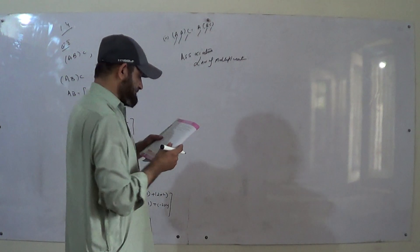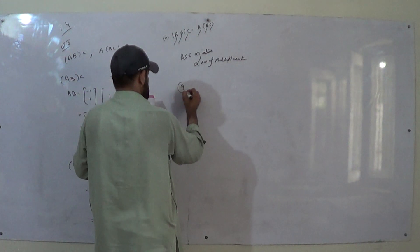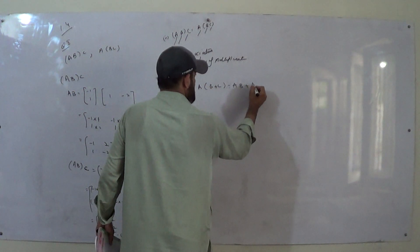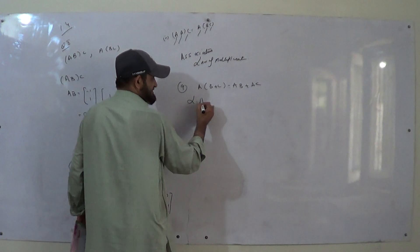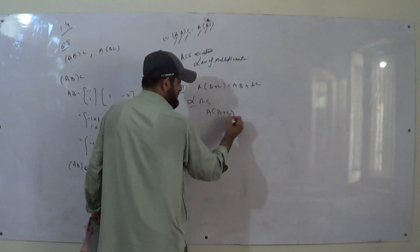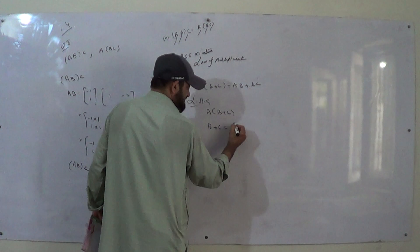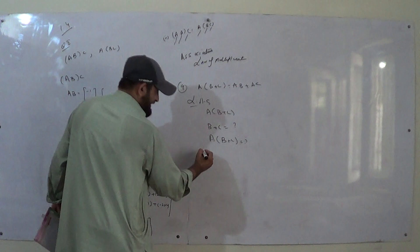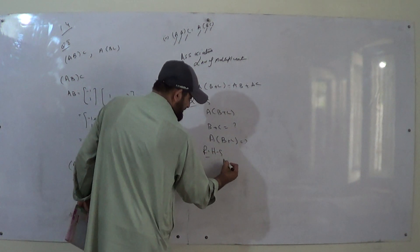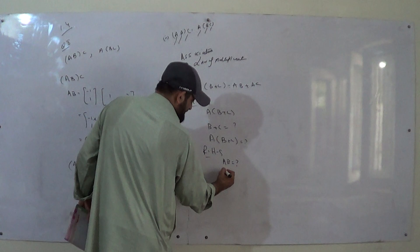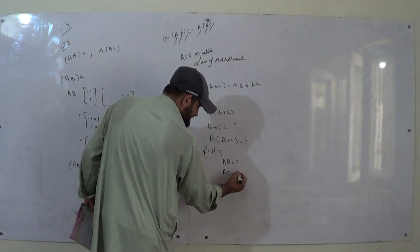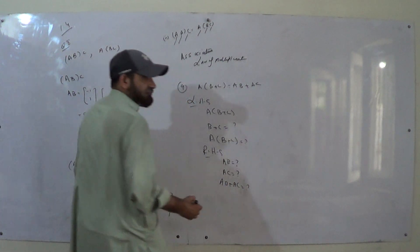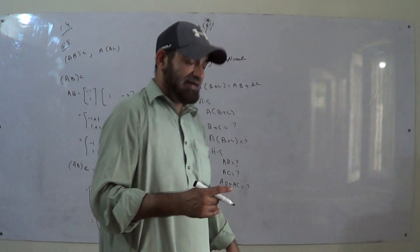Now question number 9. We are given A(B + C) = AB + AC. First we take the left hand side: A(B + C) — we find B + C, then multiply A with BC. On the right hand side, first we find AB, then find AC, then we add AB + AC. We get both sides the same — left hand side equals right hand side.